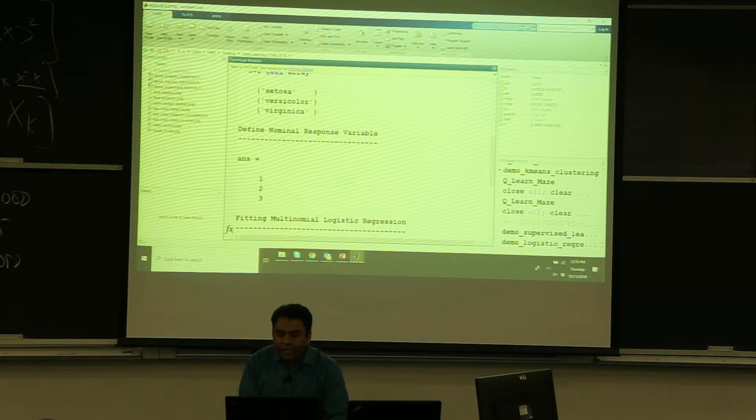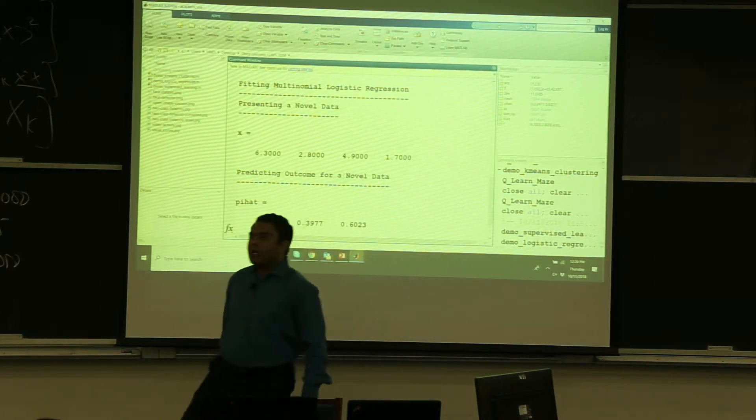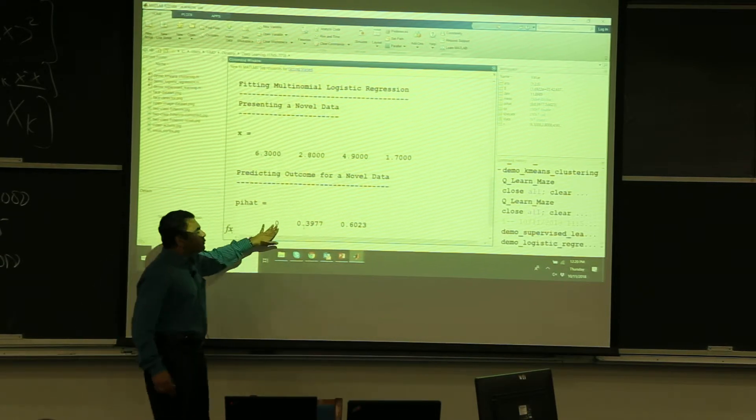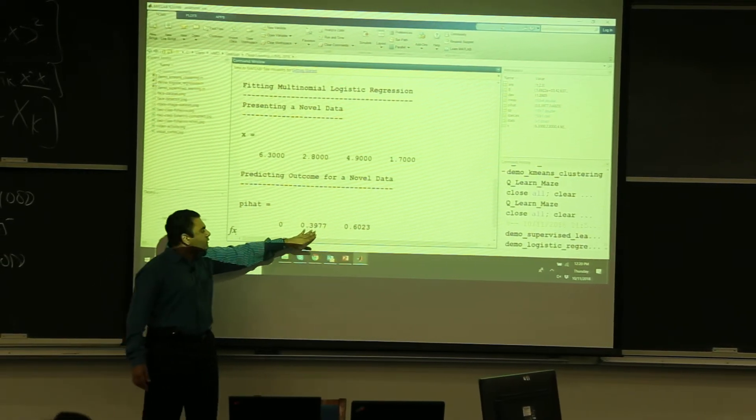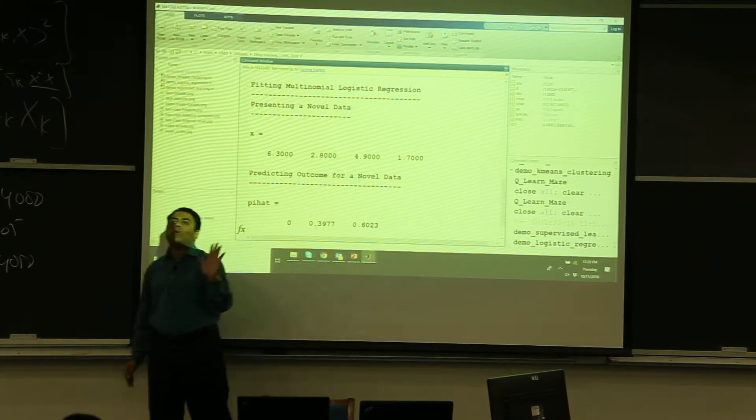And what I get at the end is basically these probabilities. It's a probabilistic estimate. So it is saying it belongs to class 1 is 0, it belongs to class 2 is close to 0.4, it belongs to class 3 is 0.6. The sum of the probabilities is 1.